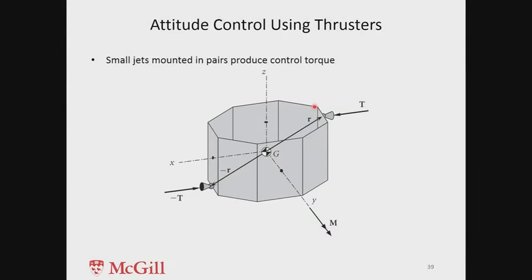We are going to now talk about attitude control, which can be done using various means. You can have thrusters, reaction wheels, momentum wheels, and other types of actuators. But the most important ones from an application point of view so far have been thruster control.